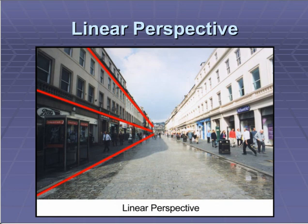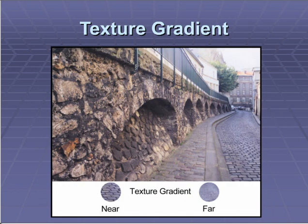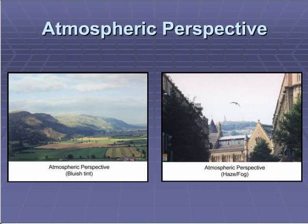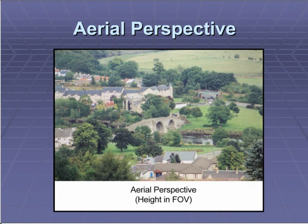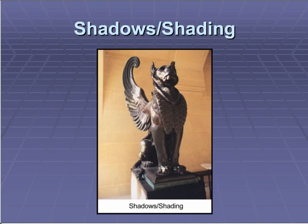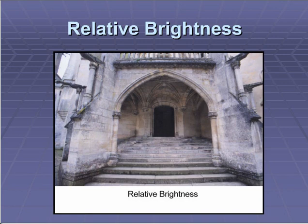We talk about texture gradient — you only see details of something that's close up. If you can see texture, your brain says it's near. We talk about atmospheric perspective — the bluish tint of the mountains, the hazy tint of things far away. We talk about aerial perspective — the higher something is in a picture, the further we assume it is away from us. These are things we're trained to know. Shadows and shading — the way that light seems to wrap around an object to give it its form. The way that things that are darker get pushed back into space — we can actually see layers and levels of things.